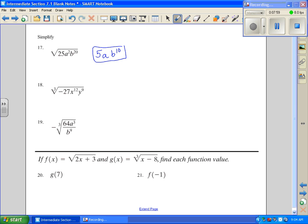Number 18, negative 27. The cube root of that is negative 3. x when I say 12 divided by that is going to be x to the 4th. And then y, 9 divided by 3 is going to be 3.